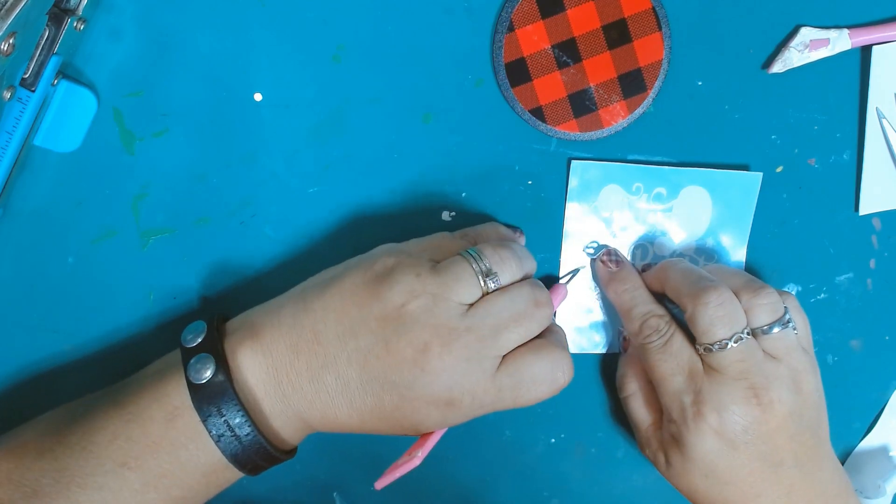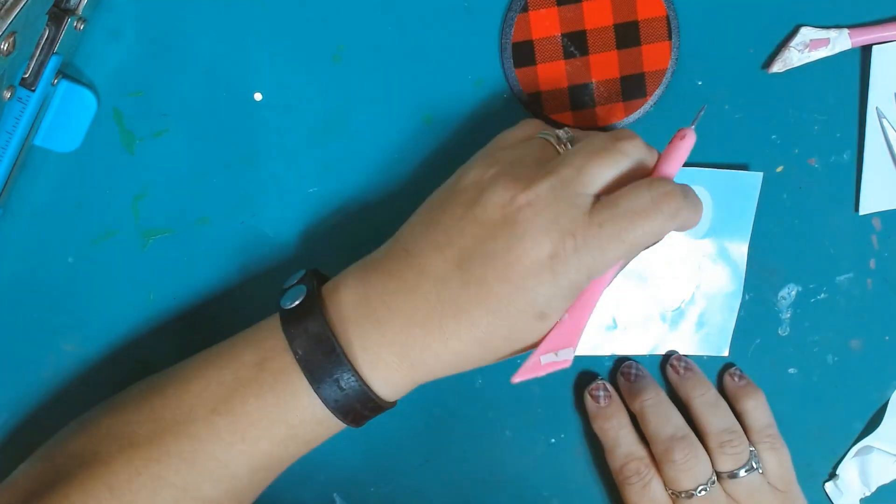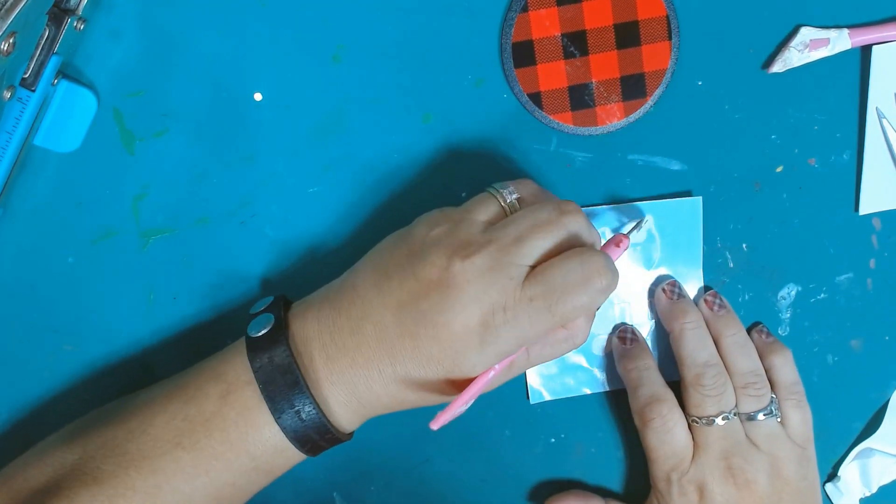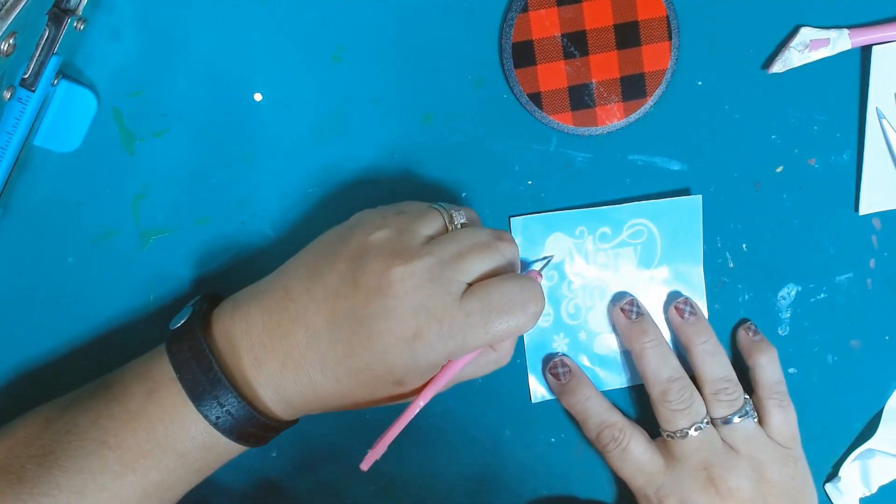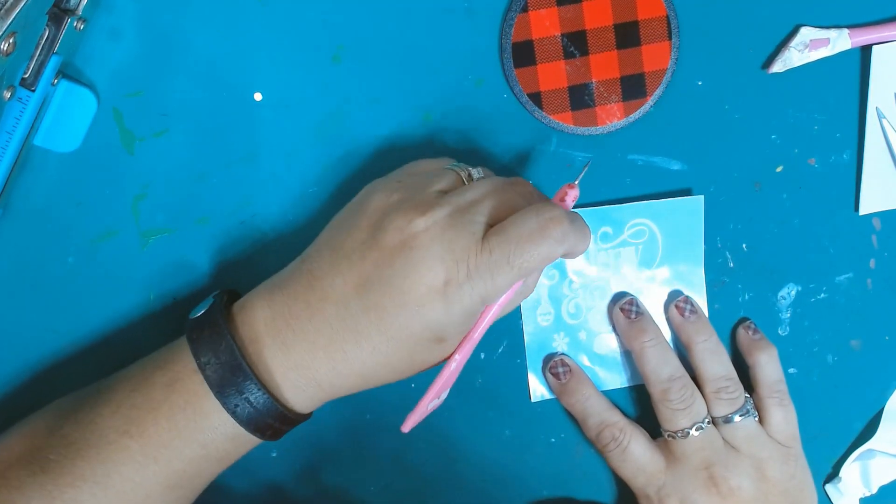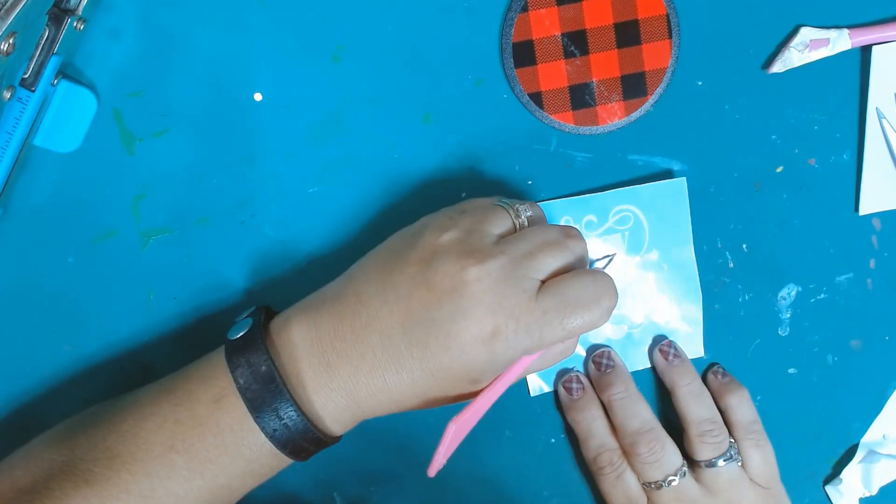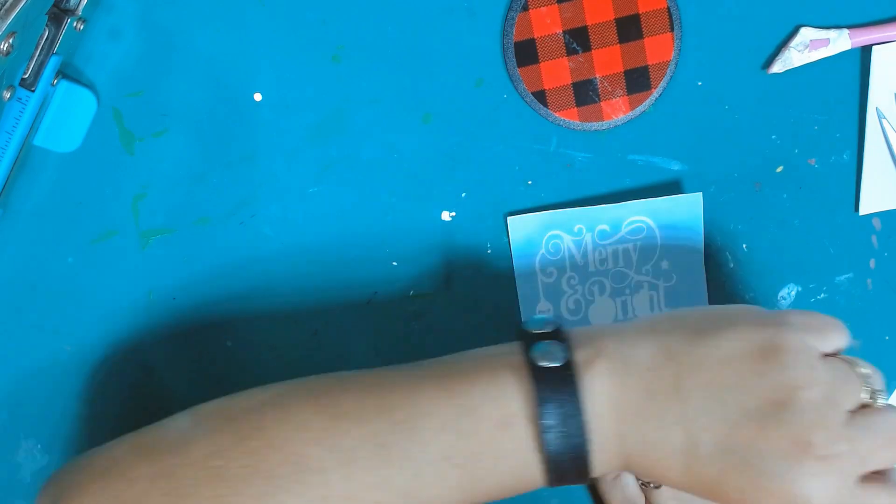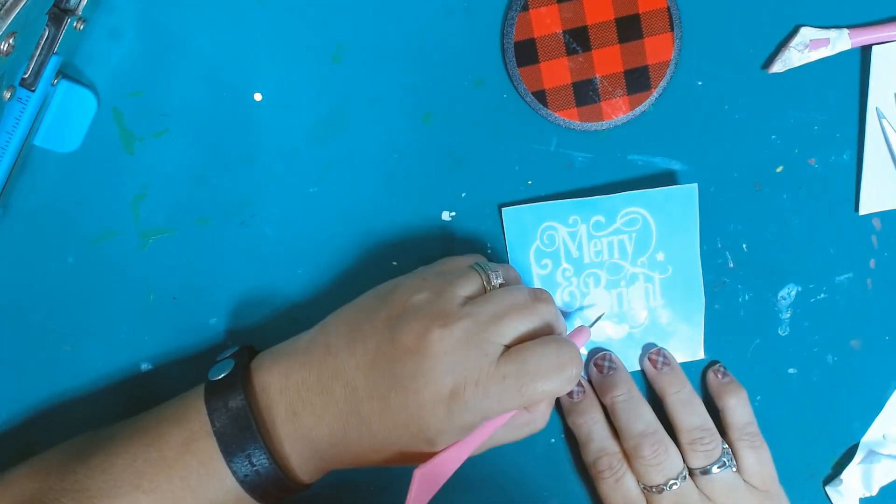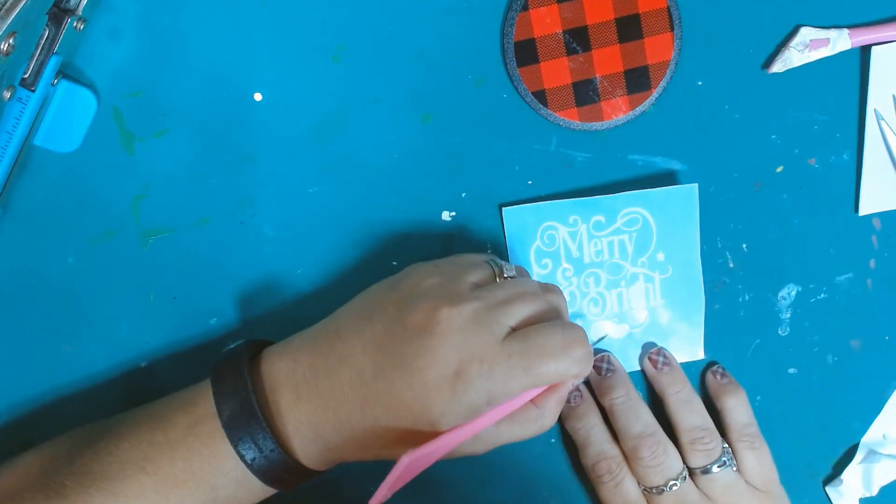HTV Ront carries HTV vinyl, adhesive vinyl, printable vinyl. They have their own heat presses with heat tape, they have mats, and they have five mats for $14.99, which I think is a good deal. I'll leave their information down below in the description box.